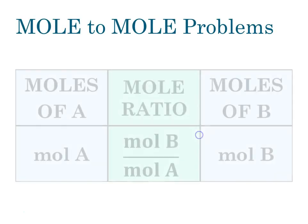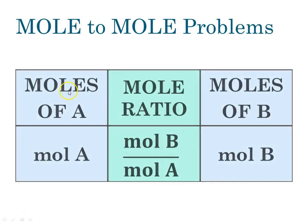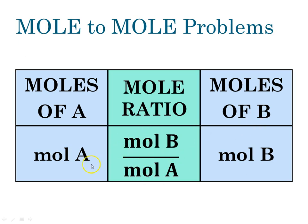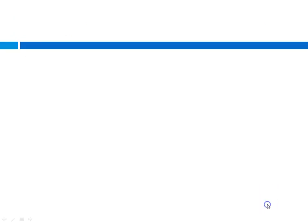For mole-to-mole problems, you're given moles of something and solving for moles of something. It's important that your mole ratio has moles of what you were given in the denominator and moles of what you want in the numerator, so that you solve for the correct thing.